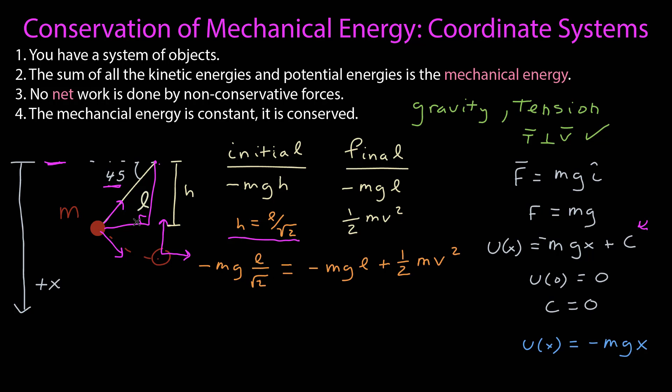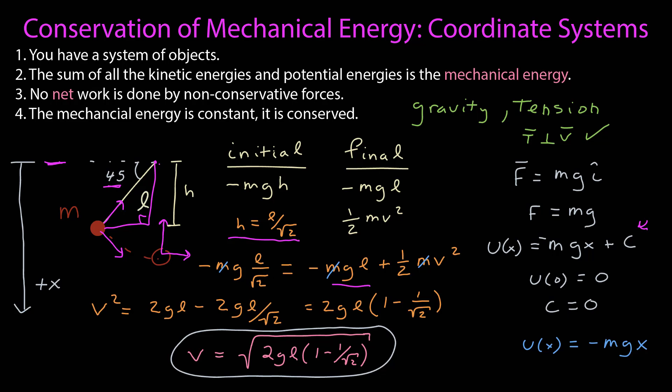Substituting that in for h, I get this expression. Now we can do some algebra to solve for the velocity. It looks like I can cancel out the mass, and I brought this negative gl over to the other side to make it positive, and then multiplied everything by 2. I factored out the 2g times the length, and now my velocity is the square root of 2, the acceleration due to gravity, the length, times this factor 1 minus 1 over the square root of 2.